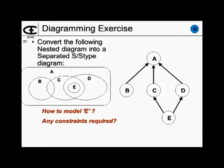In ORM, we already know the exclusion constraint — we use it in the role subset constraint. So we can connect those two subtype-supertype relationships between A and B and A and D, and say you can't be a member of both. That's what the exclusion constraint means.